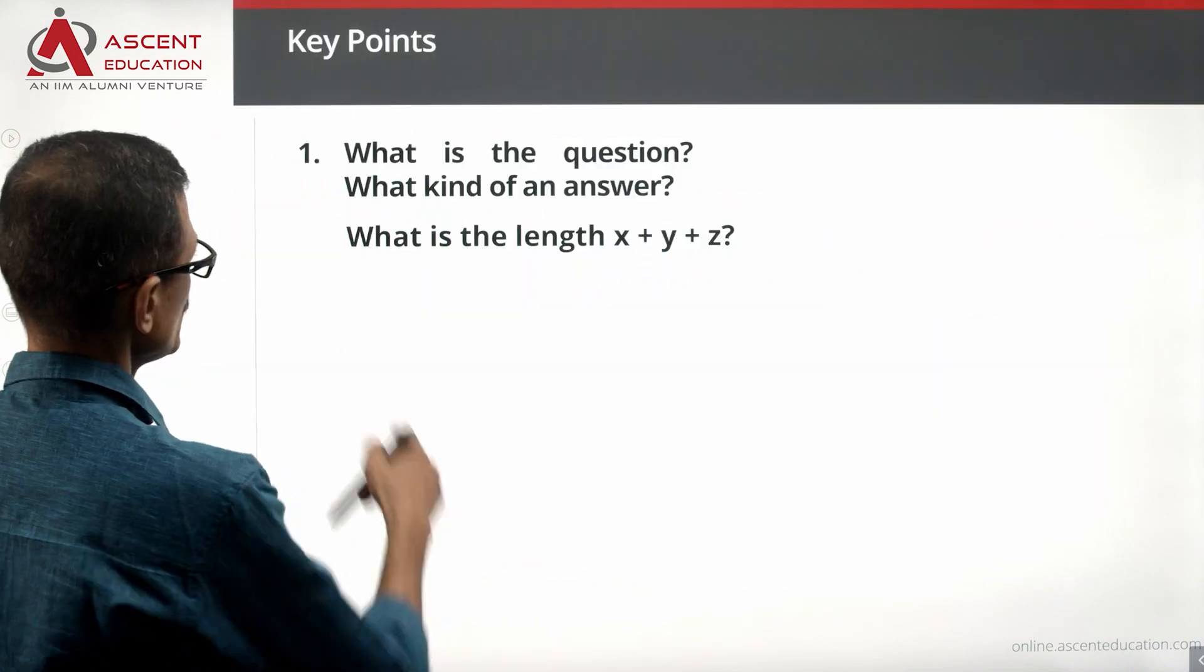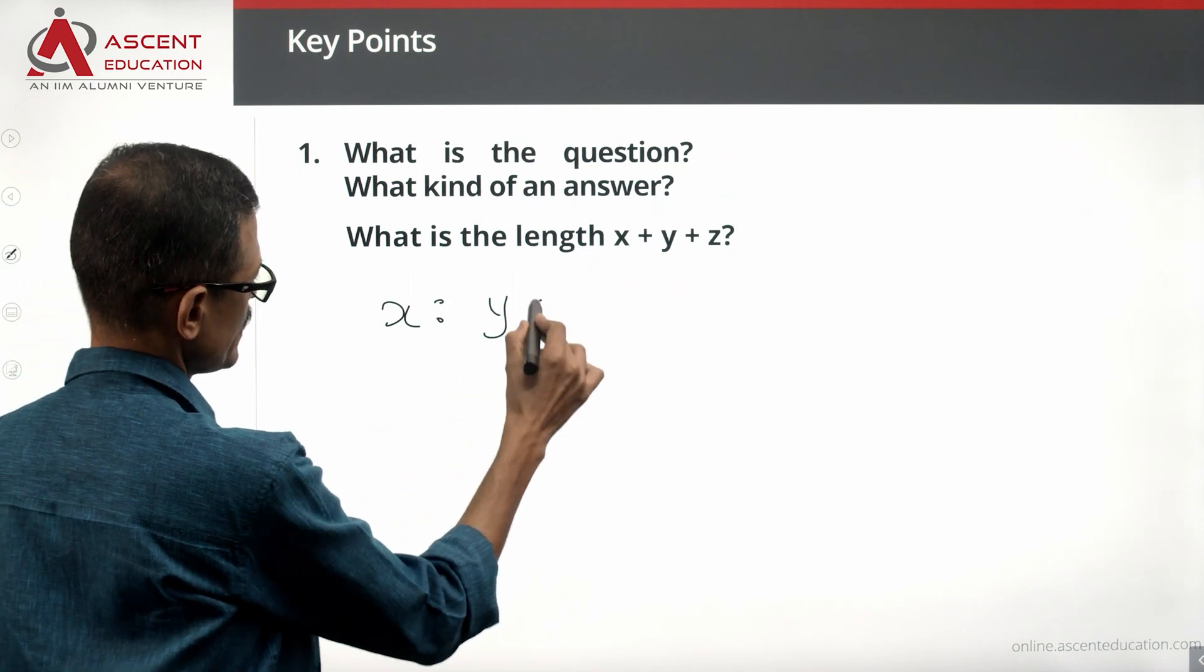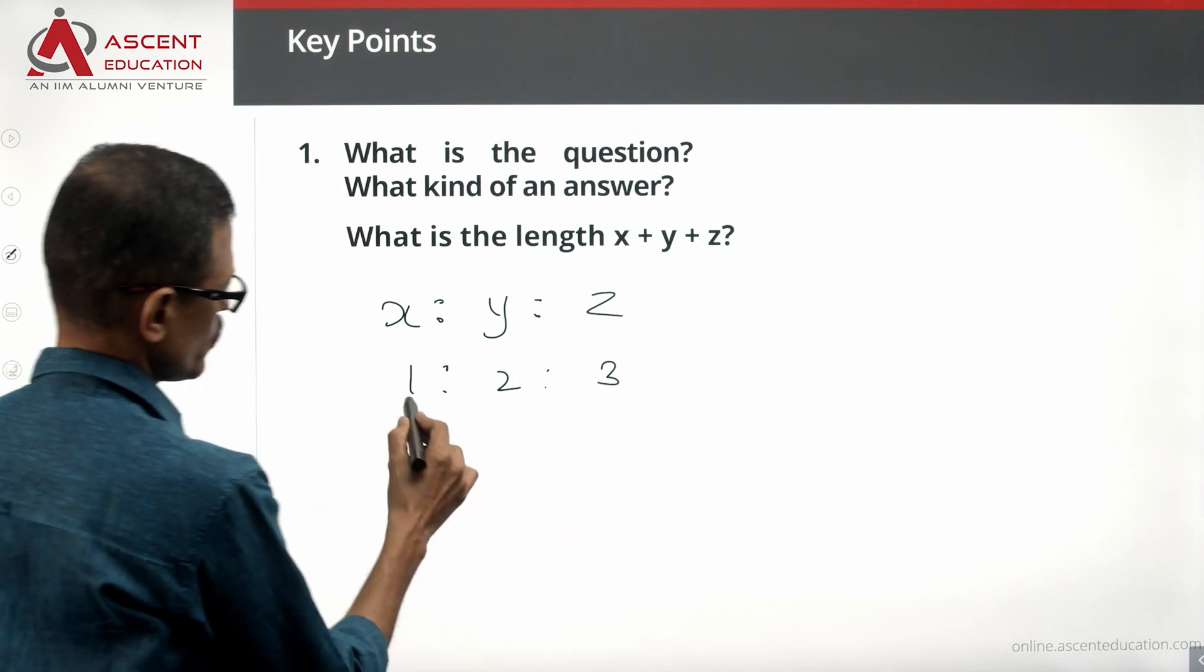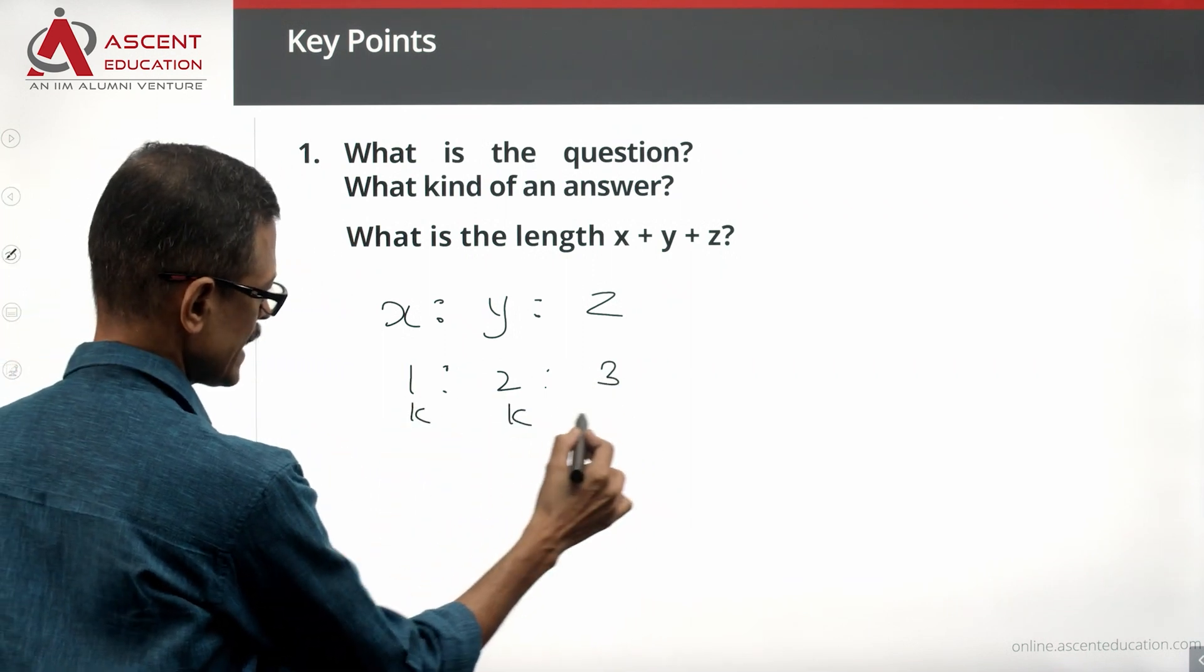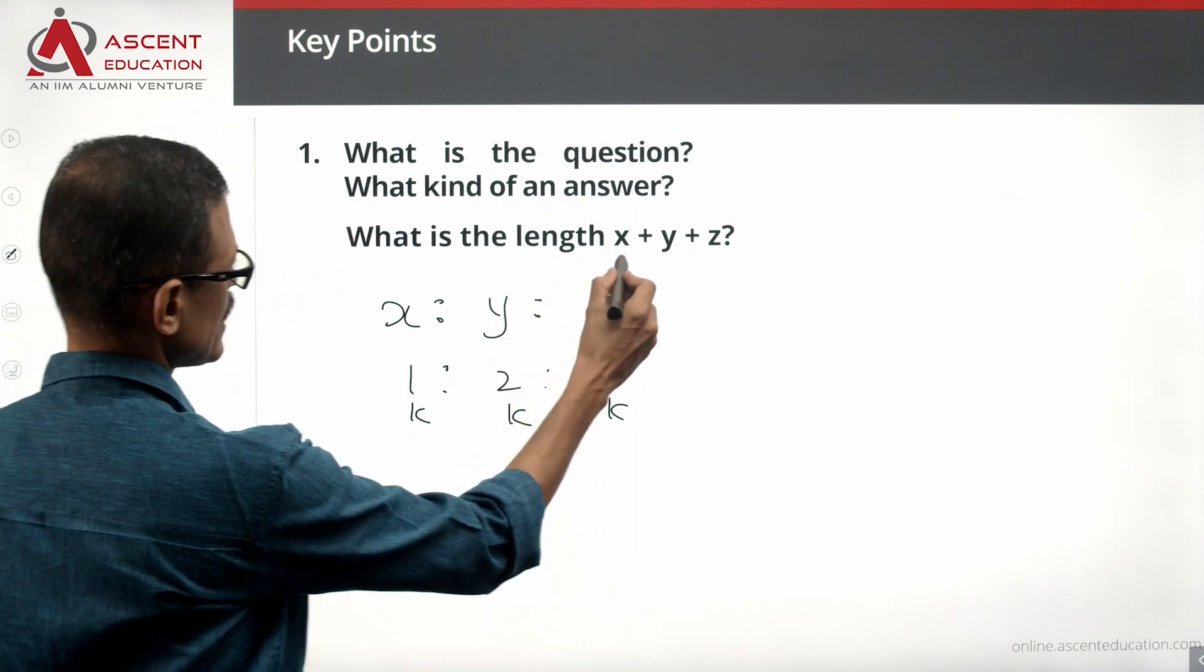Take a look at the question again. What is the length of X plus Y plus Z? X is to Y is to Z is 1 is to 2 is to 3. So either 1K is to 2K is to 3K, multiply it with a factor.